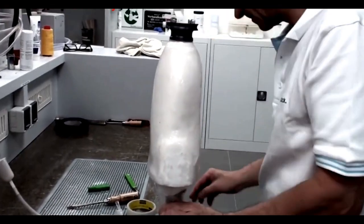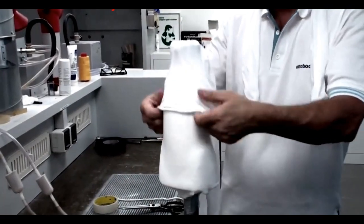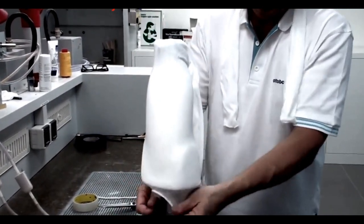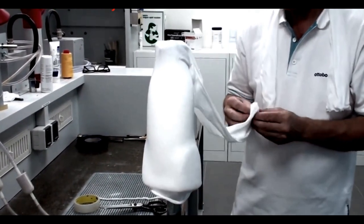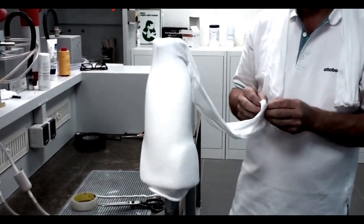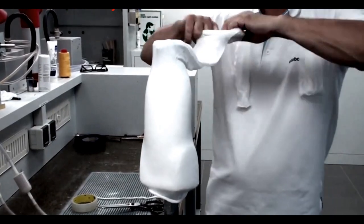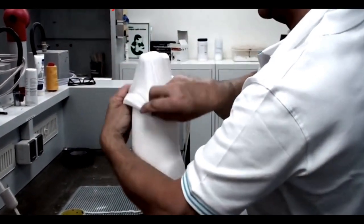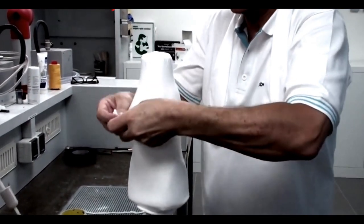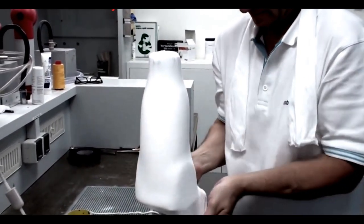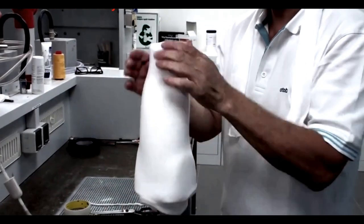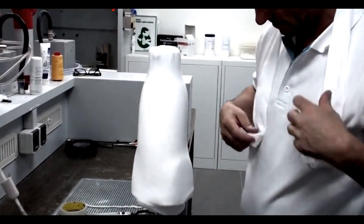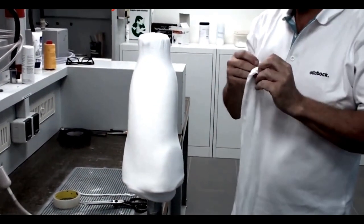In preparing our plaster model for lamination, we'd like you to take a length of Perlon stockinette slightly twice longer than the positive model. Apply it to the model, twist and double it over so you end up with six layers of Perlon stockinette. You can also use one layer of three millimeter thick Dacron felt.